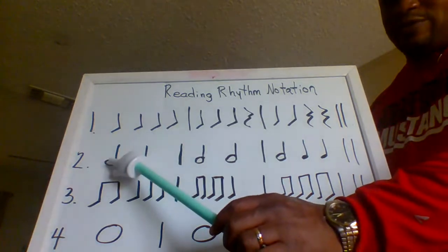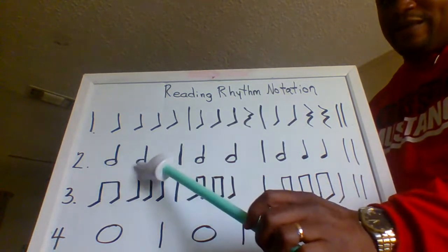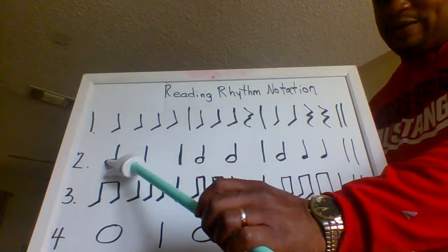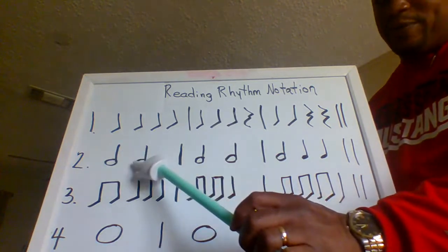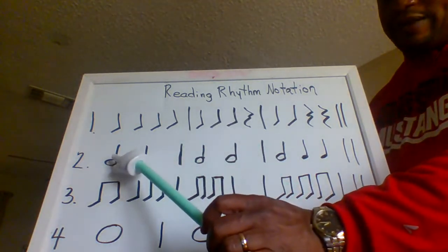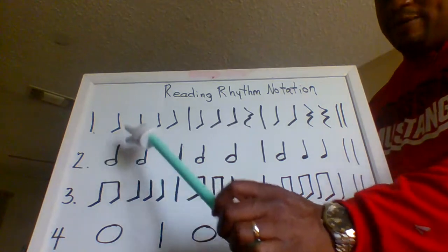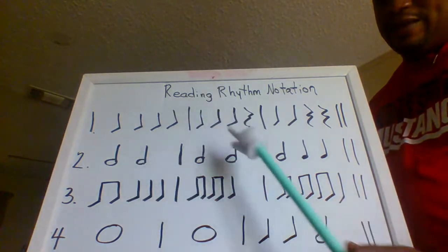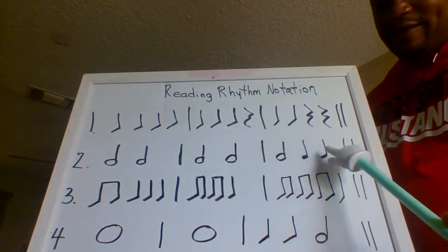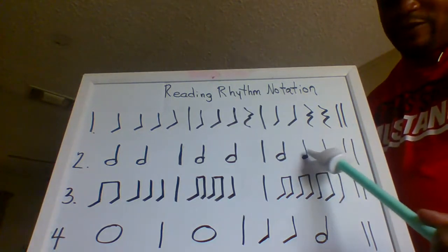Line two includes half notes. Remember, the half note gets two beats per note, and we count the half note 'one, three.' Don't forget this line includes a couple of quarter notes at the end, so remember to count those.